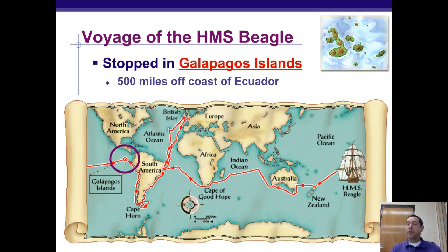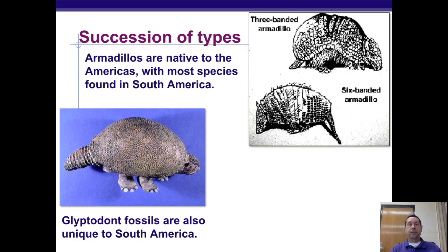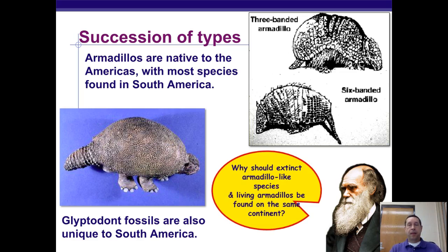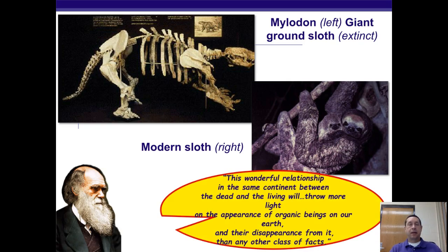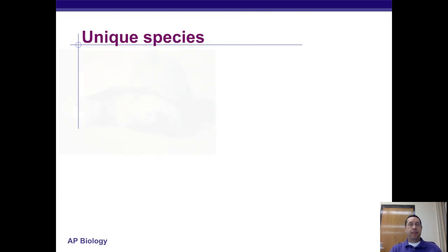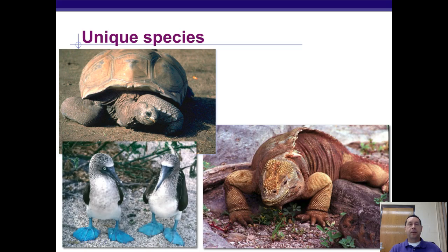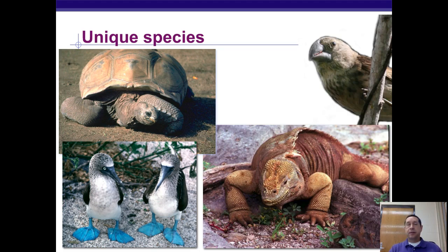Darwin saw things in the Galapagos that he didn't see on the mainland or anywhere else. Armadillos are native to the Americas, with most species found in South America. He wondered why there were both extinct and living armadillos on the same continent — it didn't make sense using Lamarck's ideas. He also observed the modern sloth and giant sloth, which looked very similar. And on the Galapagos specifically, he found unique species: Galapagos tortoises, marine iguanas, blue-footed boobies, finches, and more.